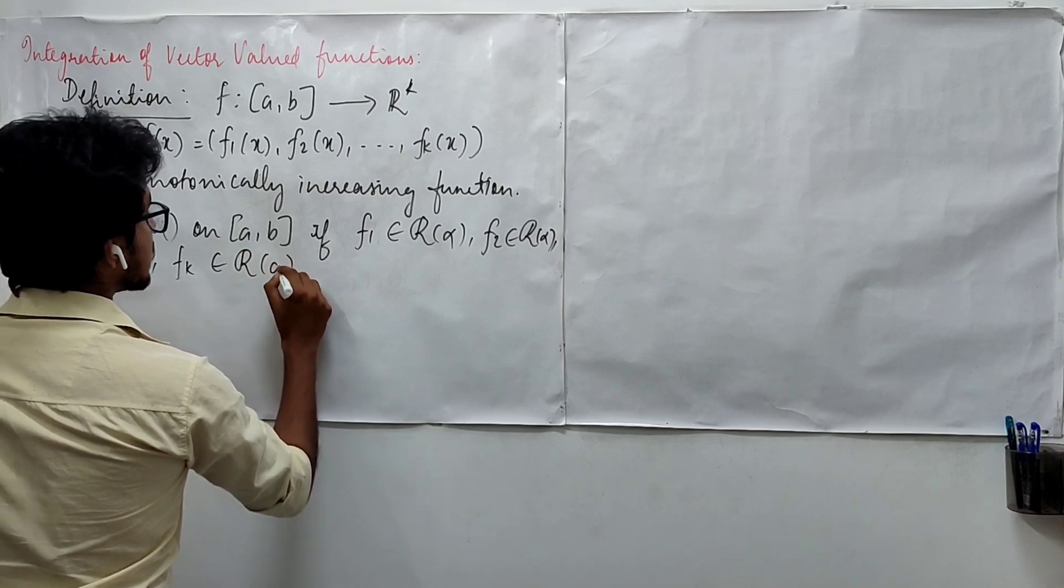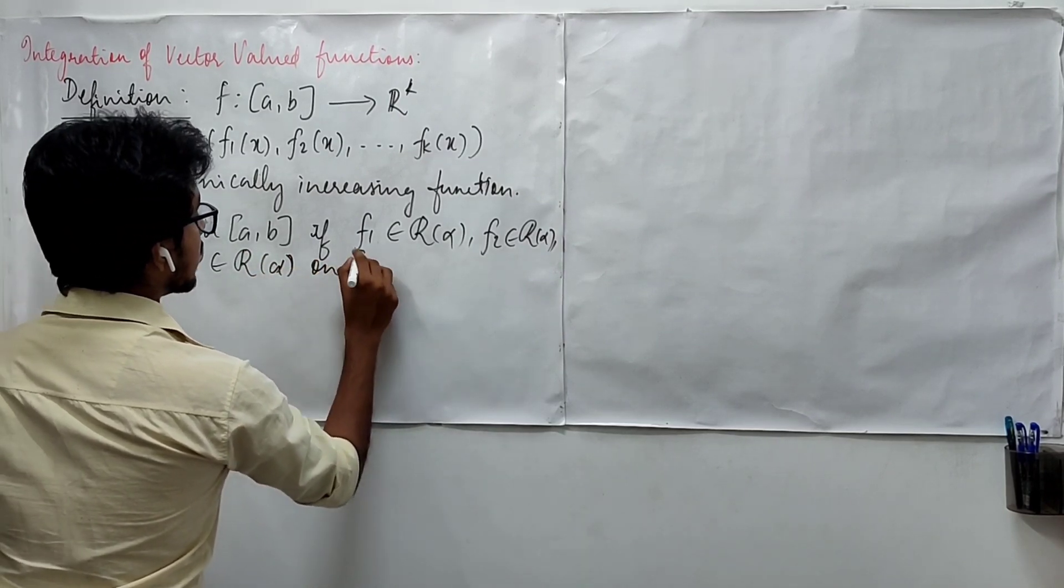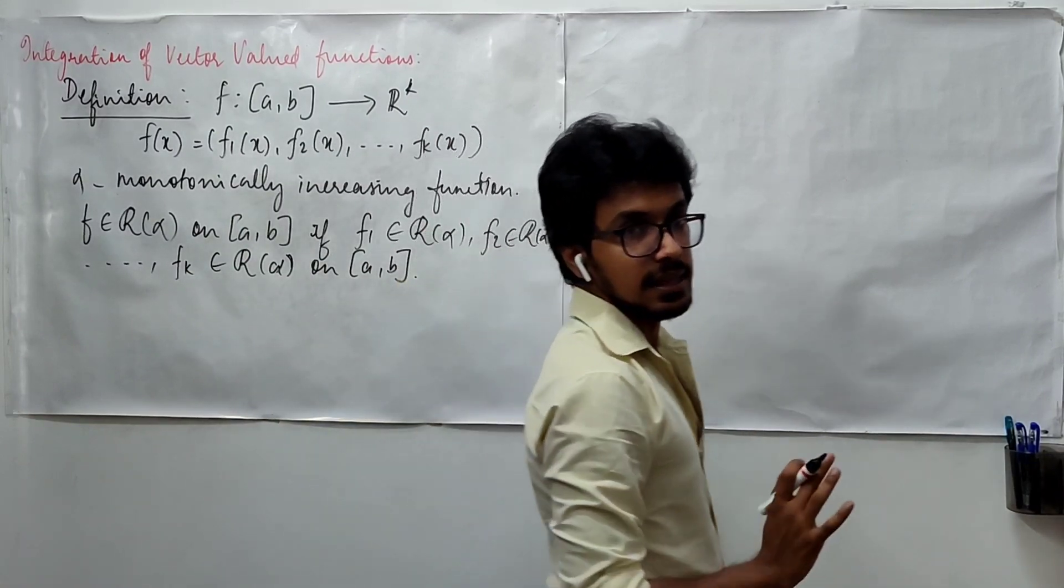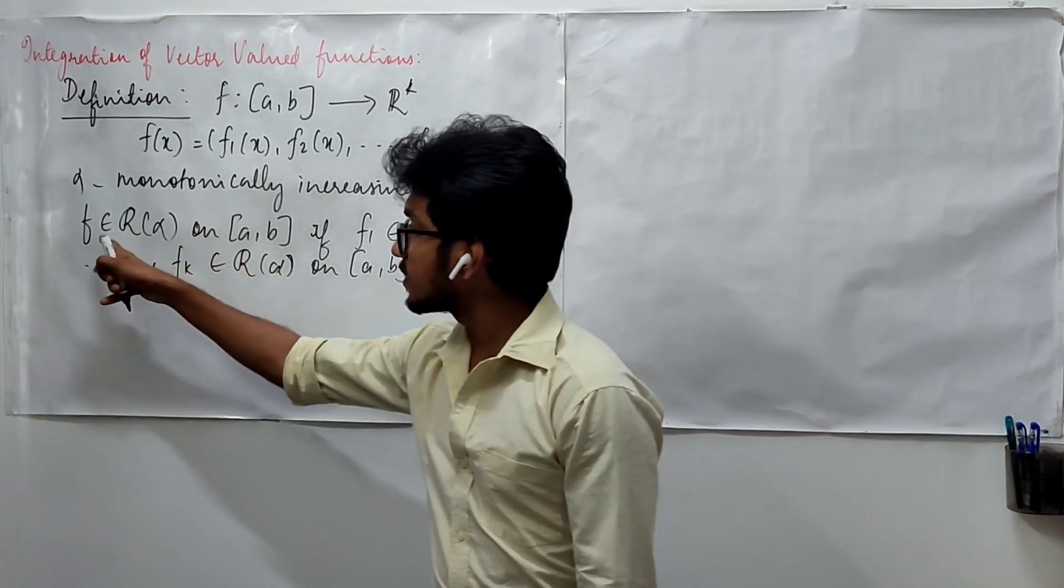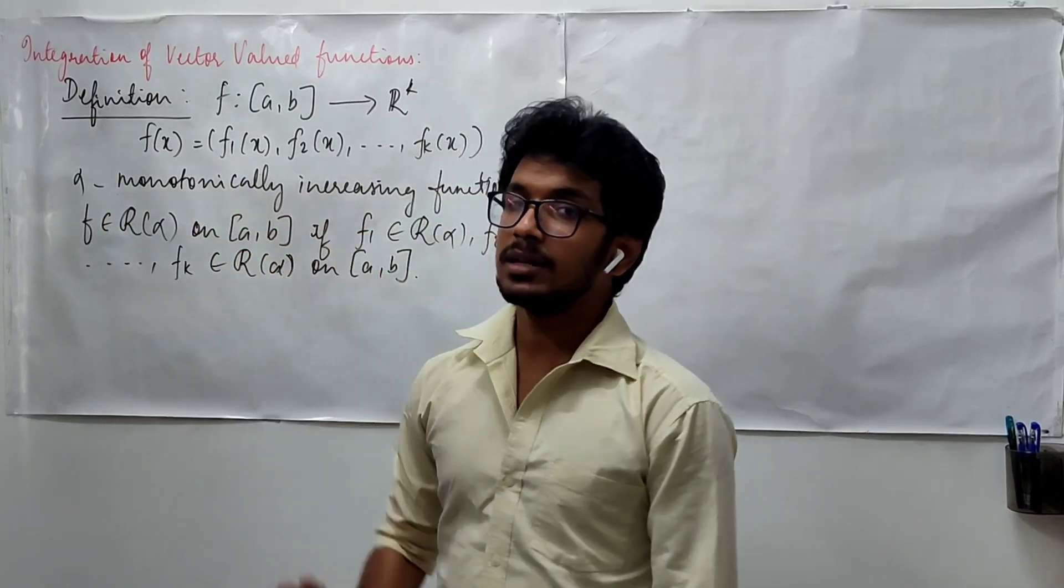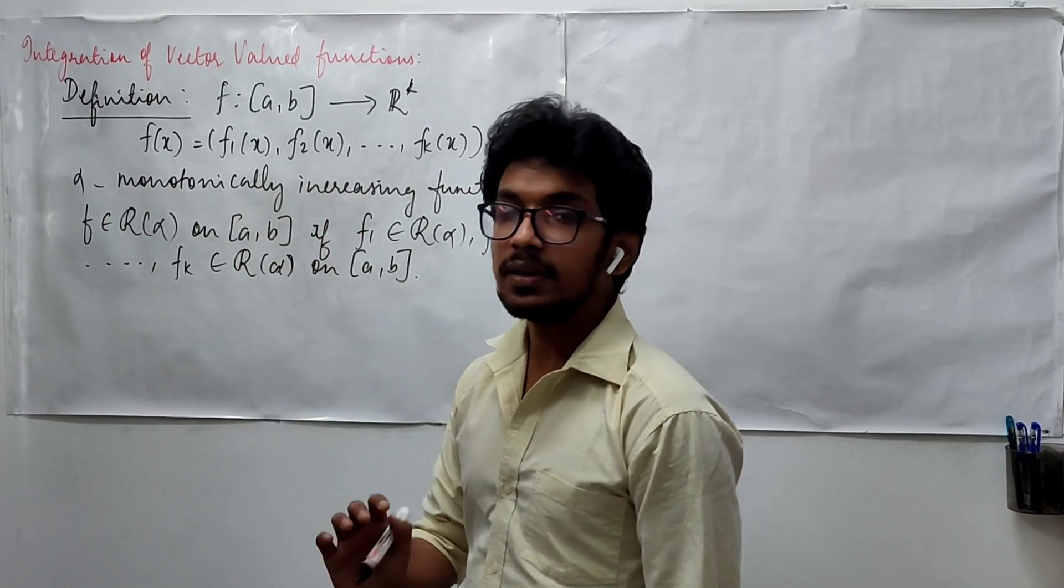If all these are Riemann-Stieltjes integrable on the closed interval [a,b], then we say that this vector valued function f is also Riemann-Stieltjes integrable on the same interval [a,b].